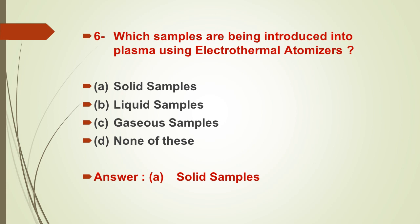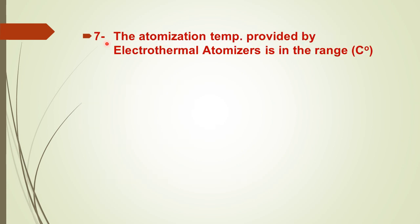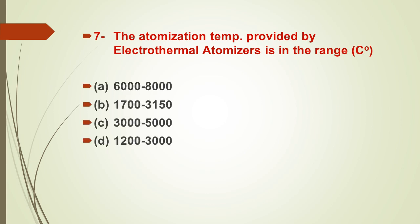Question number seven: the atomization temperature provided by the electrothermal atomizer is in what range? Options: A) 6000–8000°C, B) 1700–3150°C, C) 3000–5000°C, D) 1200–3000°C. The correct answer is option D — 1200 to 3000 degrees centigrade — that is the temperature range provided by electrothermal atomizers.